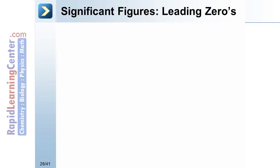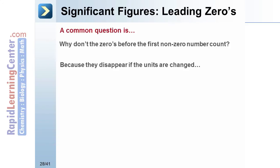Many people ask why the zeros in front don't count. They are important in showing how big or small a reading is. The reason they don't count as significant is because if you change the unit by using metric prefixes, the zeros disappear.